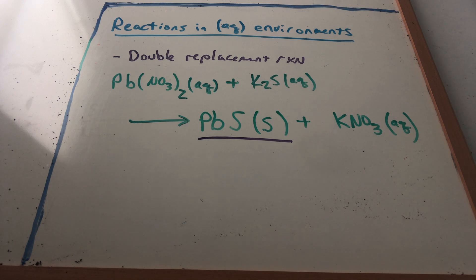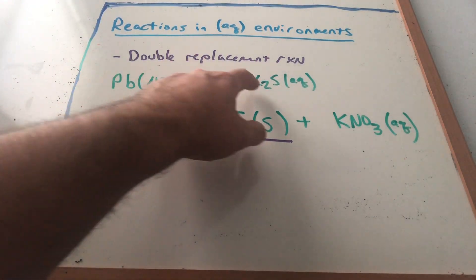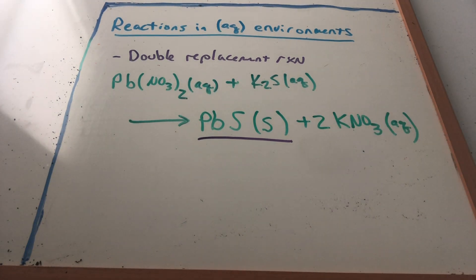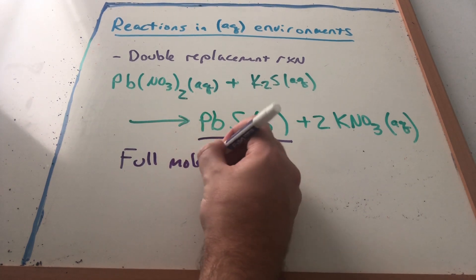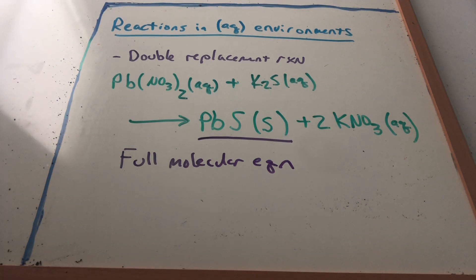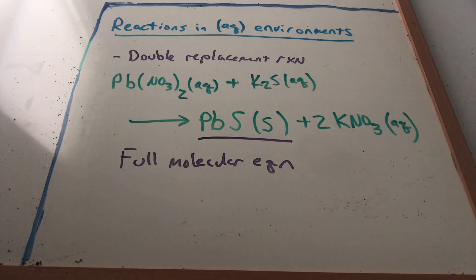There's one thing wrong with what we've written so far — we're violating conservation of mass. We need to balance it. This side has two NO3⁻ and two K⁺, so I put a 2 in front of KNO3, and everything is balanced. We call this the full molecular equation. Because a solid formed, we say that a reaction happened — exactly like that cartoon where things were aqueous before we dumped them together and now we have a solid.